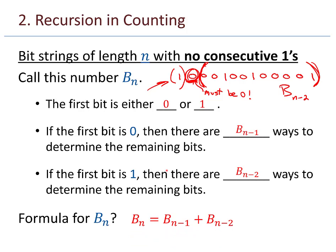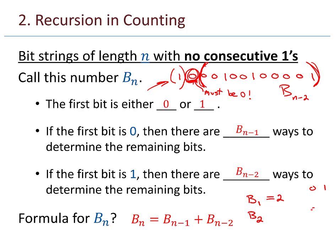So the formula is b_n equals b_{n-1} plus b_{n-2}. That looks familiar — it's the same recursive relation as the Fibonacci sequence. Let's be careful about initial conditions: b_1 is 2 (either a 0 or a 1), and b_2 is 3 (you can have 00, 01, or 10, but not 11). So b_1 = 2 and b_2 = 3.